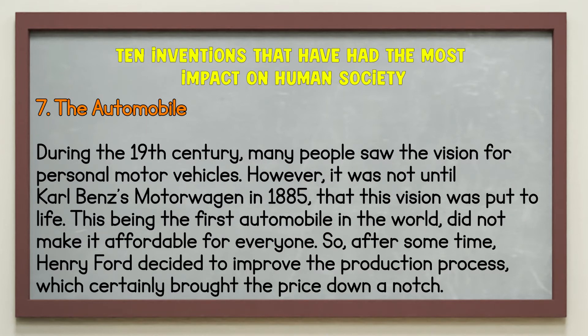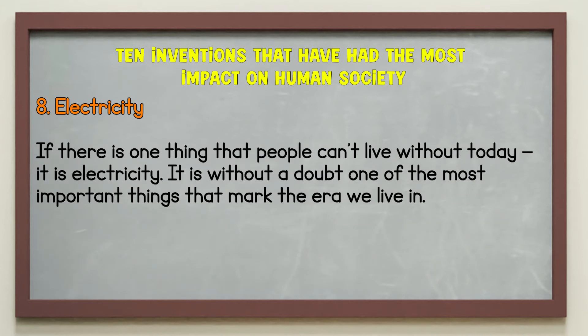Number seven: the automobile. During the 19th century, many people saw the vision for personal motor vehicles. However, it was not until Carl Benz's Motor Wagon in 1885 that this vision was put to life — the first automobile in the world. It did not make it affordable for everyone, so after some time, Henry Ford decided to improve the production process, which brought the price down. Number eight: electricity. If there is one thing that people can't live without today, it is electricity — without a doubt one of the most important things of our era. Just imagine a world without electricity: no TVs, computers, air conditioning, or electronic lights.